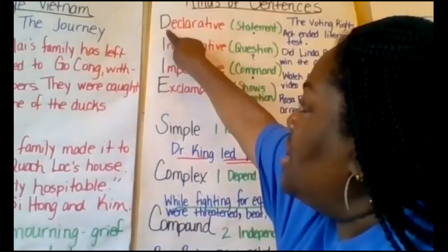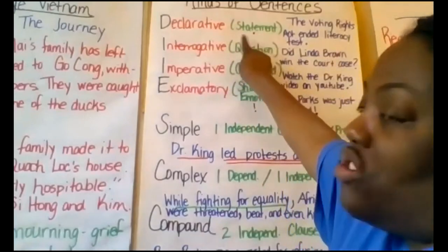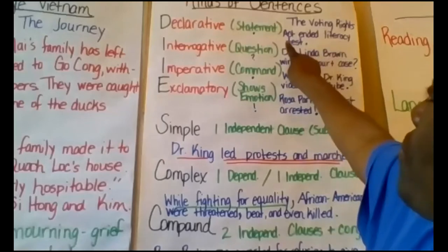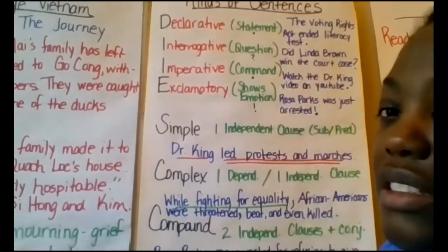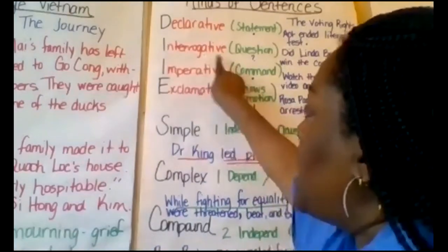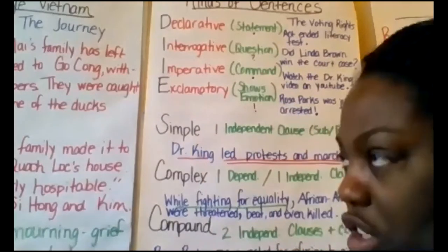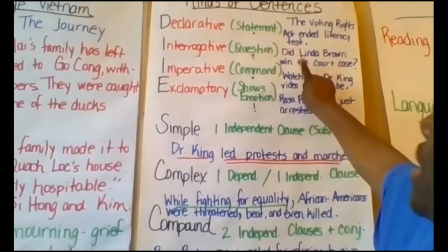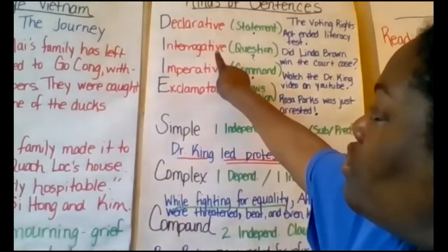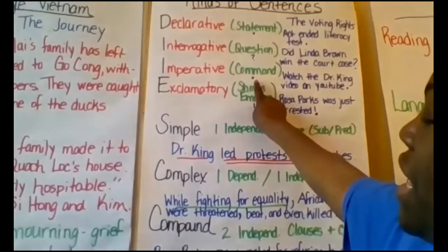D stands for declarative, which is just a statement and it ends in a period. For example: 'The Voting Rights Act ended literacy tests' — that's just a statement. I stands for interrogative, which is a question and it ends in a question mark. 'Did Linda Brown win the court case?' is a question, so an interrogative sentence is a question.